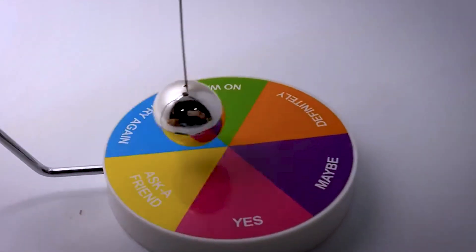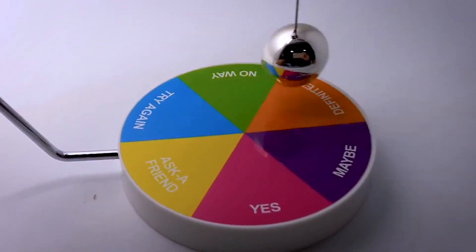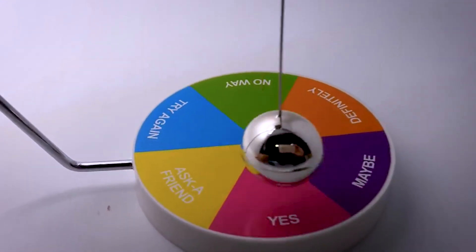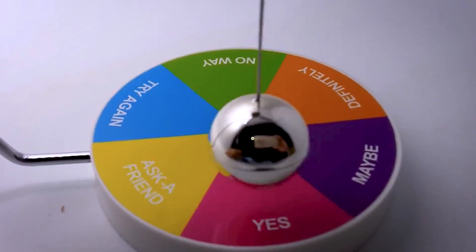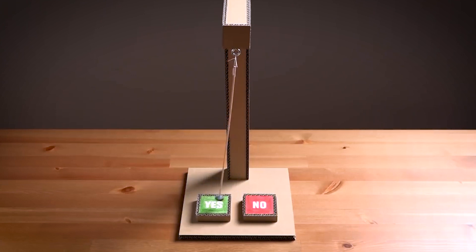Just give the ball a gentle push and watch as it gracefully settles on one of the options. Maybe, definitely, no way, try again, or ask a friend. What makes this decision-maker special is not only its engaging features but also its strong build. Made from sturdy steel, it ensures durability and eliminates worries about accidental breakage that often plagues the fragile 8-Ball version.